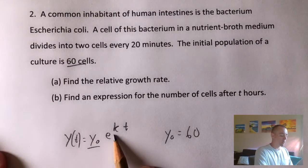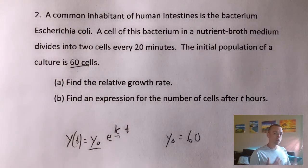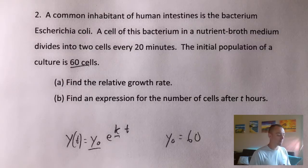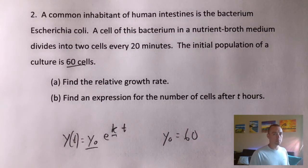K is our relative growth rate. So this k represents, it could be the relative growth or the relative decay rate, depending on if the problem is a growth or a decay problem. In this case, obviously our population is growing, so that k represents the relative growth rate. And then t is the time that we're trying to figure out the population of the cells at.